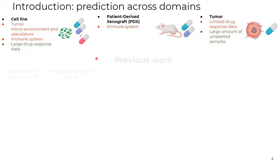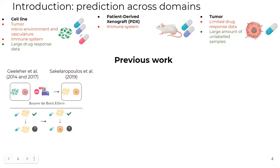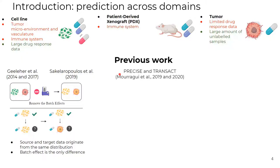So, some previous works addressed this gap of predicting cancer drug response in patients. Geeleher et al., followed by Sharifi-Noghabi et al., first removed the batch effects from cell lines and patients' datasets. Later, they trained a linear regression in the case of Geeleher, or a multilayer perceptron for Sharifi-Noghabi, to predict drug response in patients. However, the work relies on the assumption that source and target data originate from the same distribution.